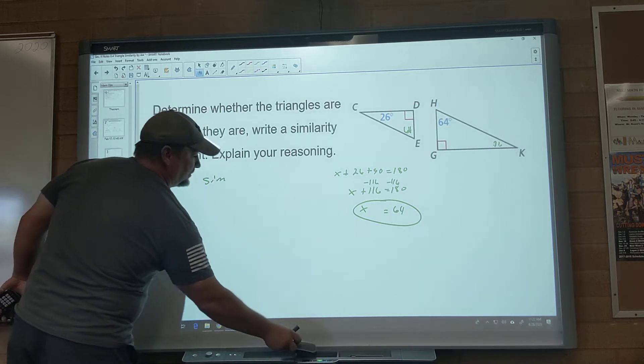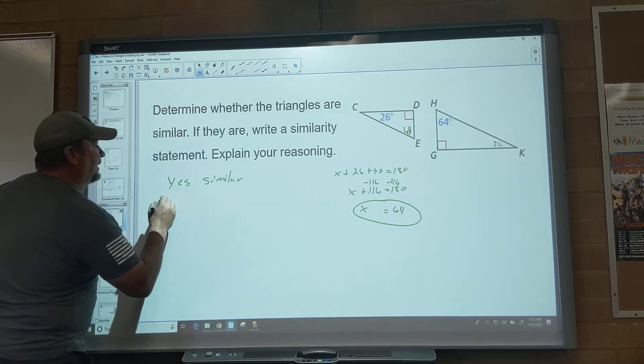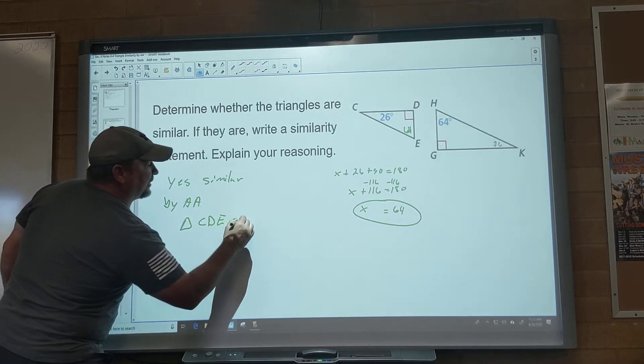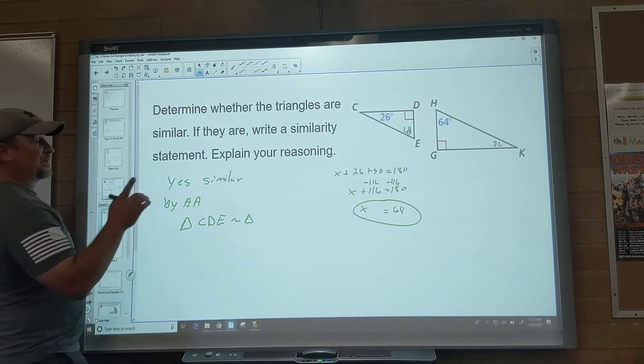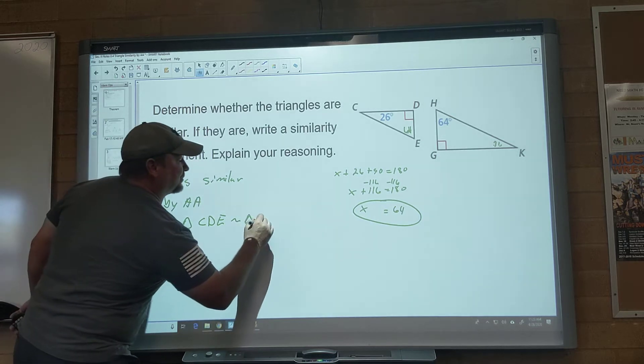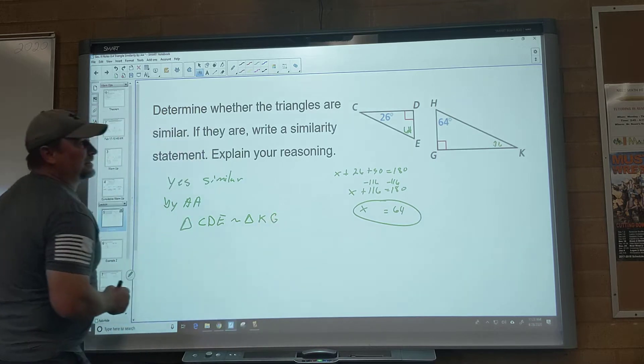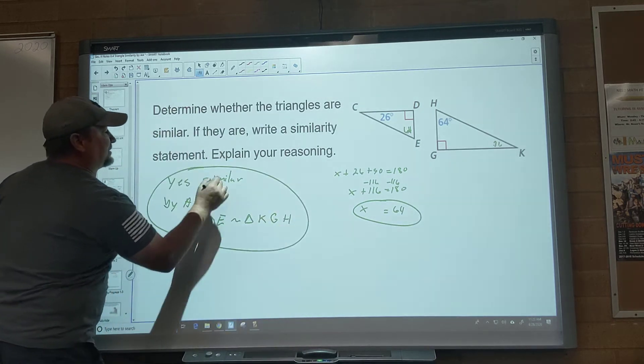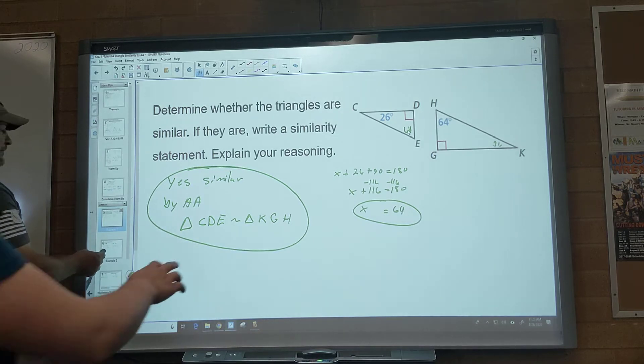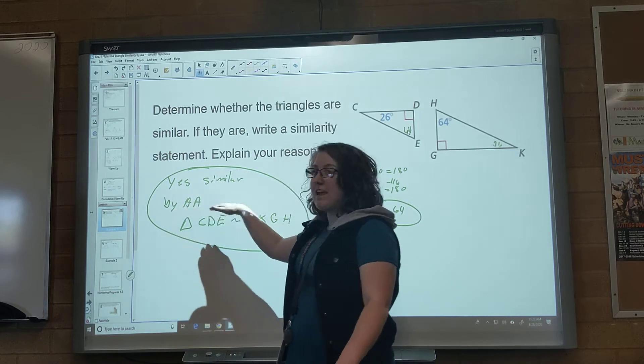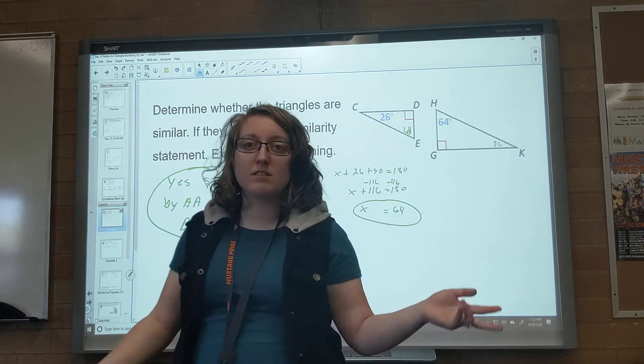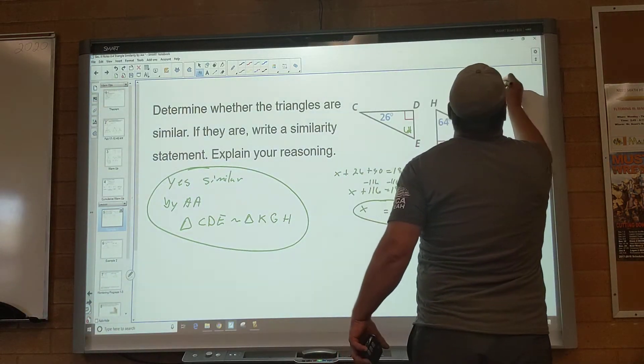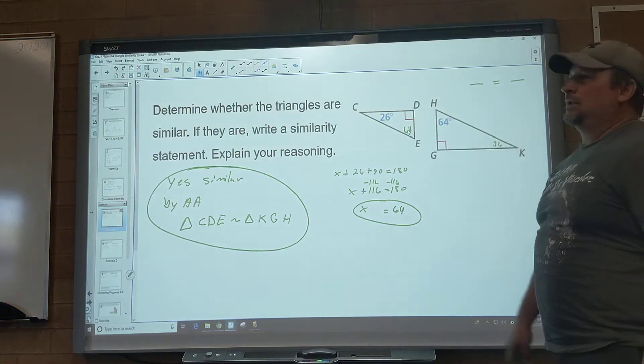And by triangle CDE, remember it doesn't matter how I say the first two, are similar to, try them now, watch how we do these letters. C went with 26, so K goes with 26. D was the 90, so G is the 90, and then E was the 64 here, so H is the 64 there. And this is your answer, that's what we proved it with. So that's all we have to do whenever it says explain your reasoning, you just say by angle angle on this one, because that's our lesson. And don't forget, the moment we know this, we know similar, we do know this, a fraction will equal a fraction with the sides.